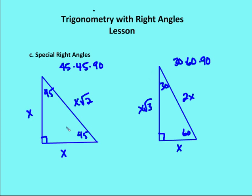In a 45-45-90 triangle, my legs will always be the reference side — we'll say those are the value of X. My hypotenuse is always going to be X root 2. So for example, if I have a leg length of 3, I know my other leg length is 3, and I know that my hypotenuse is going to be 3 root 2.